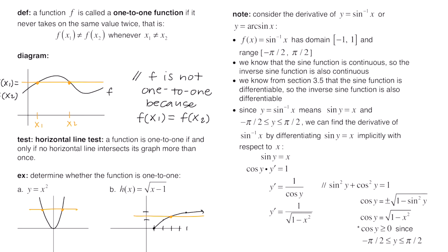Next we're going to look at inverse trig functions. First, sine inverse of x, also referred to as arcsine — sine inverse is the same as arcsine. The function f of x equals sine inverse has a domain from negative one to one. For the graph of sine, the range goes from negative one to one, so sine inverse has domain from negative one to one, because functions and their inverses have their domains and ranges switch. The range for sine inverse goes from negative pi over two to positive pi over two, because over that interval the function passes the horizontal line test.